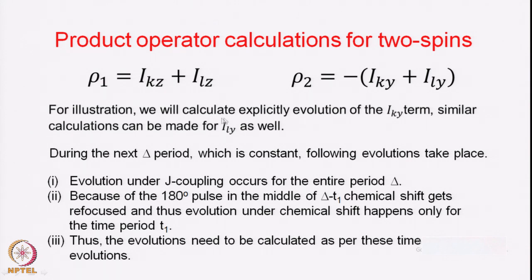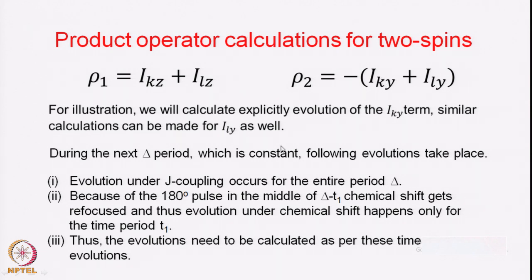Let us look at the product operator calculations for a two-spin system. For illustration we consider a two-spin system; the initial density operator at rho 1 is Z magnetization of the two spins Ikz plus Ilz. Once you apply the first 90x pulse you create the Y magnetization of the two spins: minus Iky plus Ily. Since these two are independent spins, they evolve independently, and we will consider the K spin evolution — the same thing can be applied to the L spin.